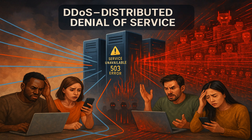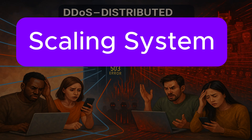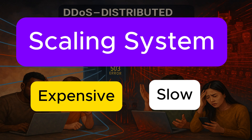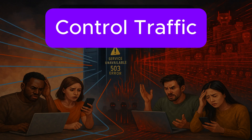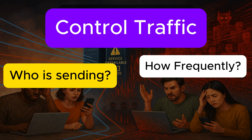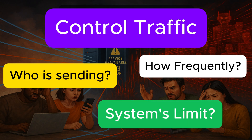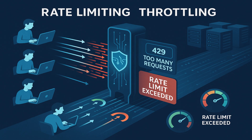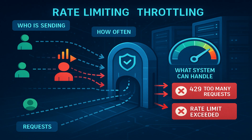Even if it is not intentional, the impact is the same — your system gets flooded with traffic it can't handle. You can't just rely on scaling up every time this happens; that is expensive and not always fast enough. So instead, what you need is a way to control the number of requests your system accepts, based on who is sending the request, how frequently, and what your system can handle safely. That's where rate limiting and throttling come in — they help control this traffic so one user or client doesn't consume more than they should.